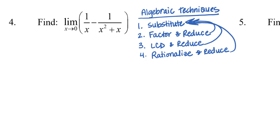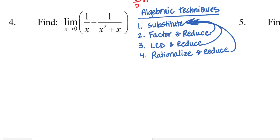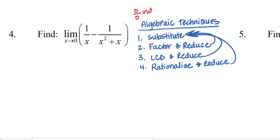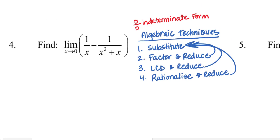The result after rationalizing may not look more simplified than the beginning — in fact the beginning might look simpler — but the reason we do it is to remove that discontinuity and then substitute in that value. You'll know you need one of these algebraic techniques when substituting gives you zero over zero, which is the indeterminate form we'll discuss more later in the semester.